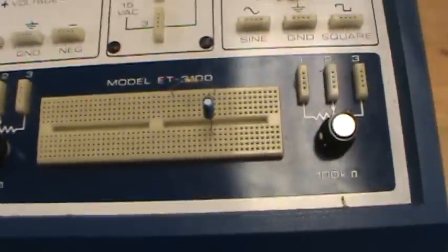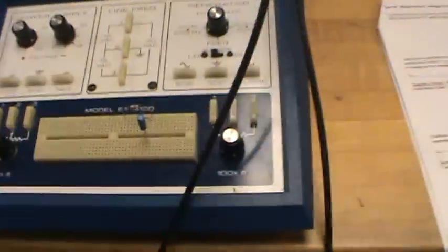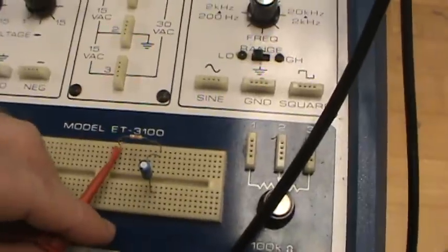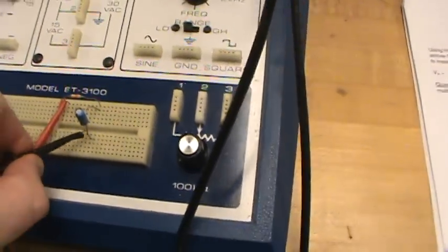So I've already done part of that over here. You take the function generator BNC cable, and I want to put the red one over here on the resistor side. And I can put the negative terminal over here on the capacitor.